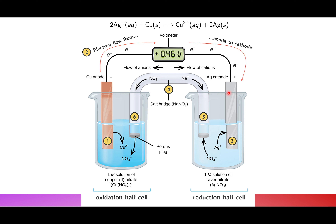This is a silver electrode, and here we have reduction occurring. The silver ions are taking up the electrons coming from the copper electrode. Since reduction is happening here, this is the cathode, and since oxidation is happening at the copper, that's the anode. The anode is negative, the cathode is positive.